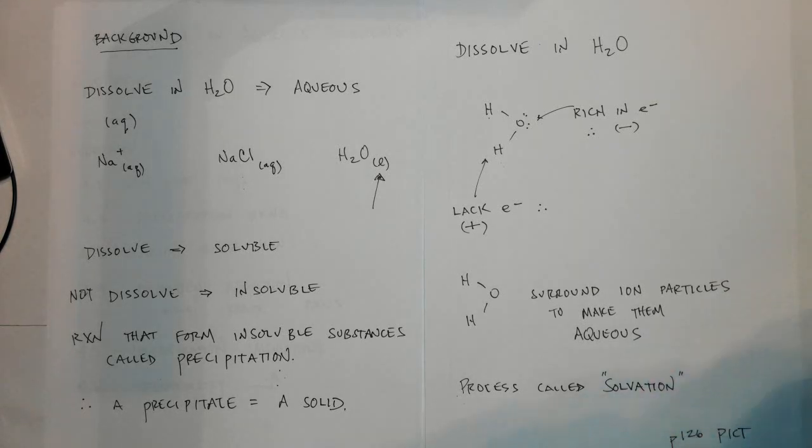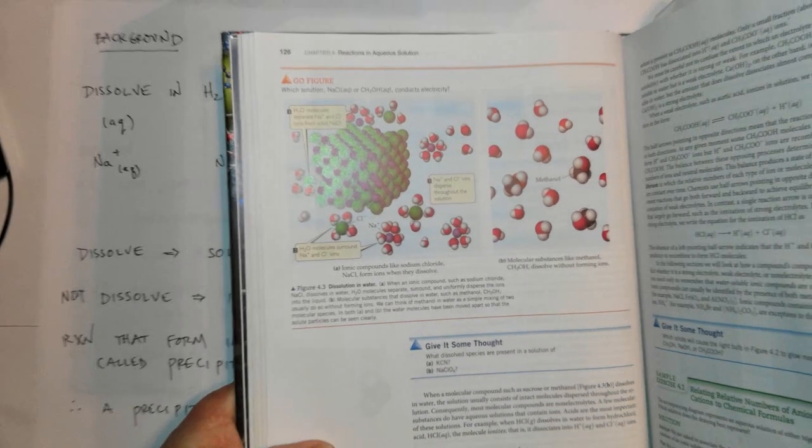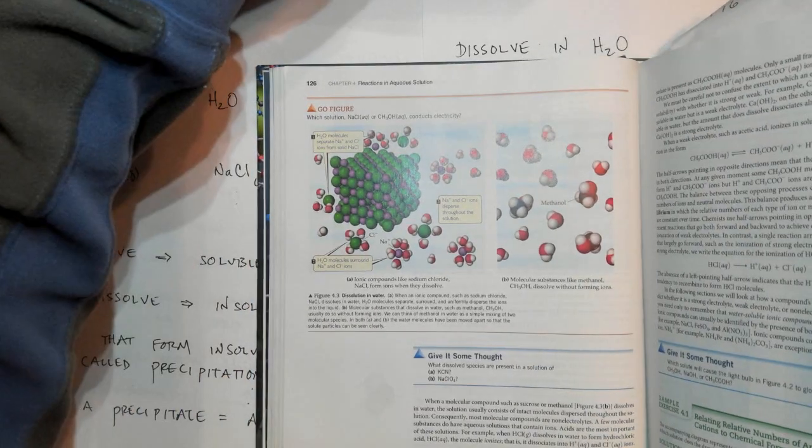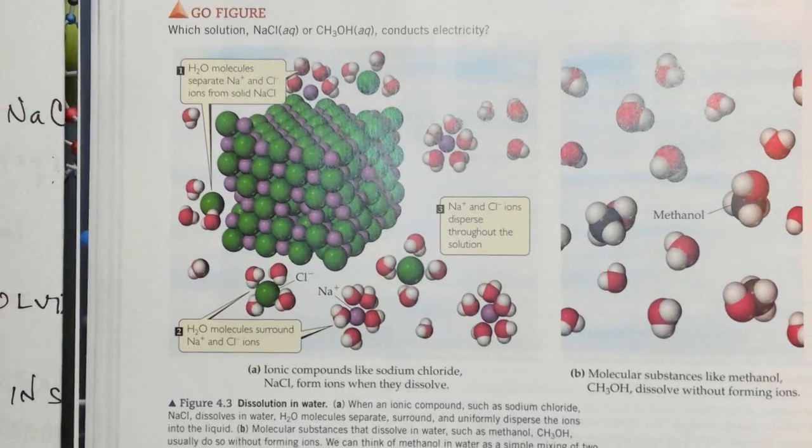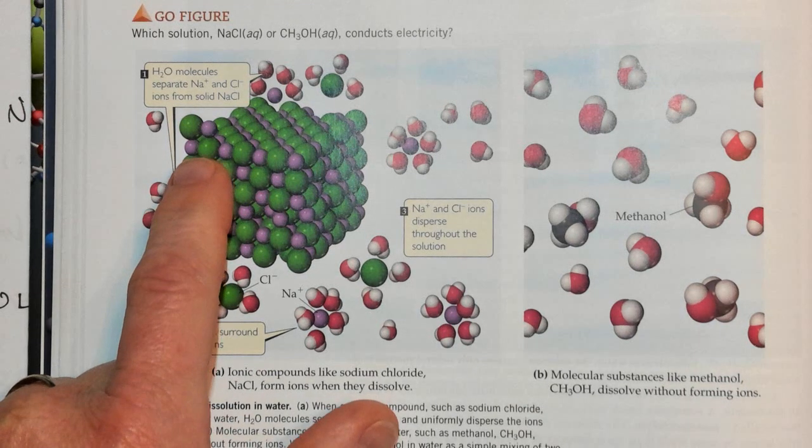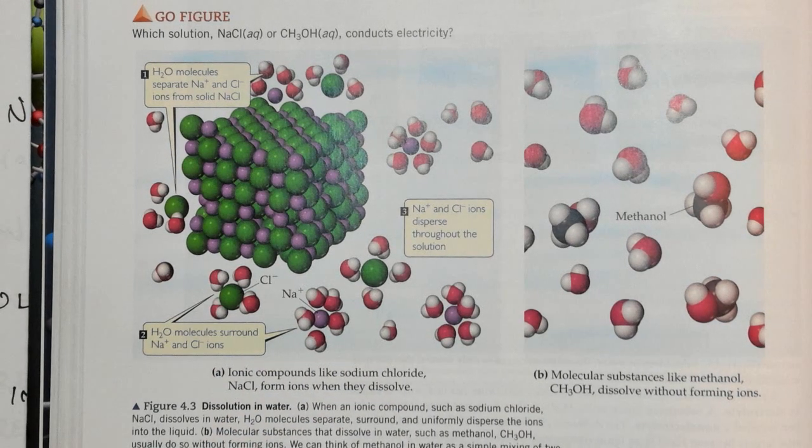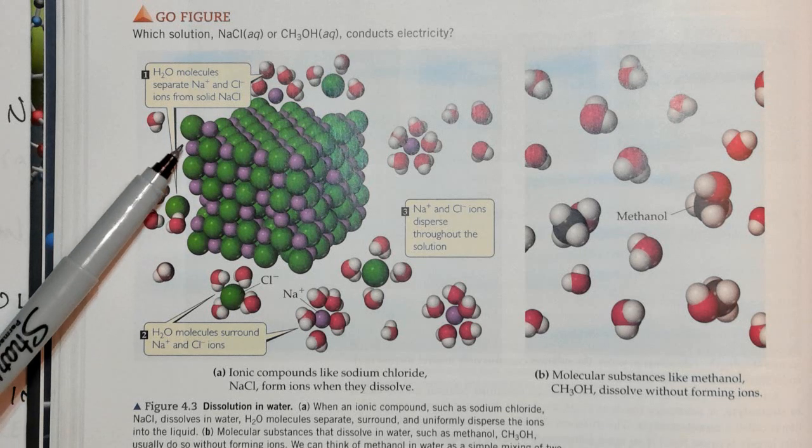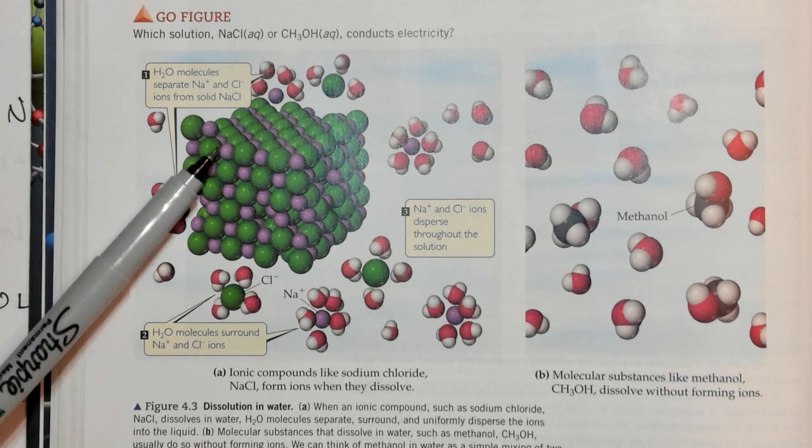In your textbook, whichever one you happen to be using, they have a picture of several solvated compounds. I'll zoom in on these and we'll do a little bit of explaining. You'll notice that this is a series of sodiums and chlorines. Sodiums are the purplish little spheres. Chlorines are the green little spheres.